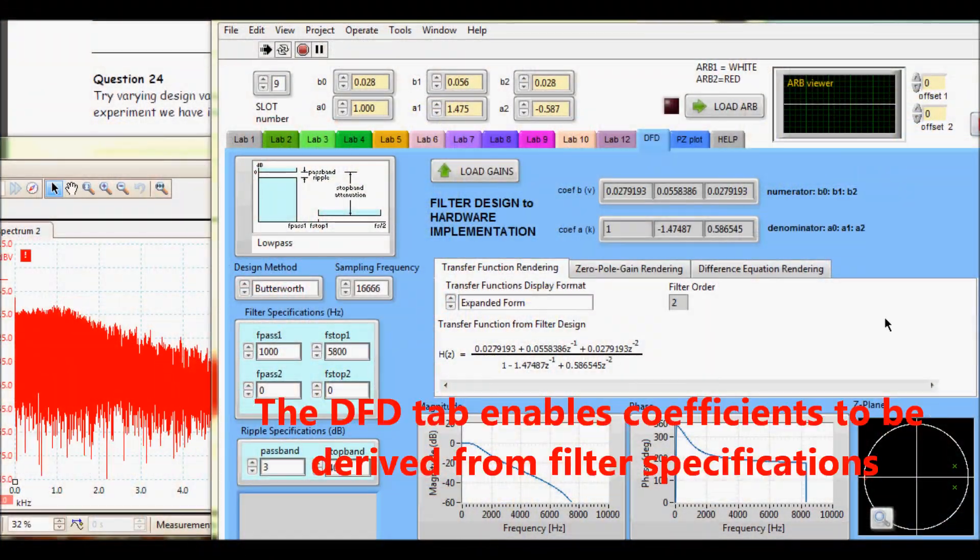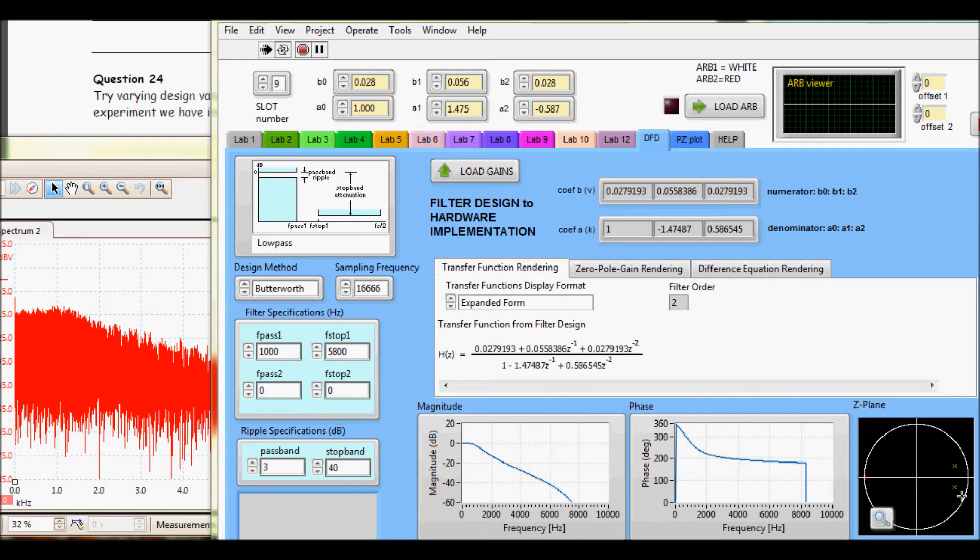A digital filter design tab on the on-screen control panel allows filter designs to be implemented as coefficient values and then studied with the real world signals.